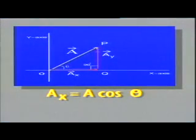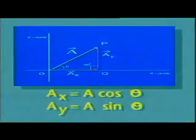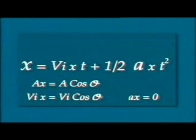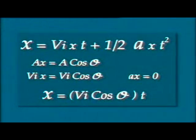Recall from scalar and vectors that the horizontal component of a vector is given by ax = a·cosθ, so vix = vi·cosθ. We replace vix by vi·cosθ. Since vx remains constant throughout the flight, ax = 0, which gives us x = vi·cosθ × t. This is our equation A.